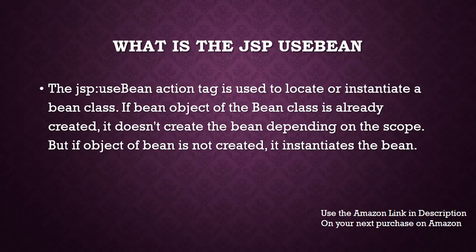What is JSP useBean? The jsp:useBean action tag is used to locate or instantiate a bean class. If a bean object is already created, it doesn't create the bean depending on the scope. But if the object of the bean is not created, it instantiates the bean — that is the use of useBean.